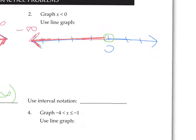For the interval notation, the left boundary is negative infinity, which is always open — infinity always gets parentheses. The right boundary is 0, which is also open, because there was no equal to sign.